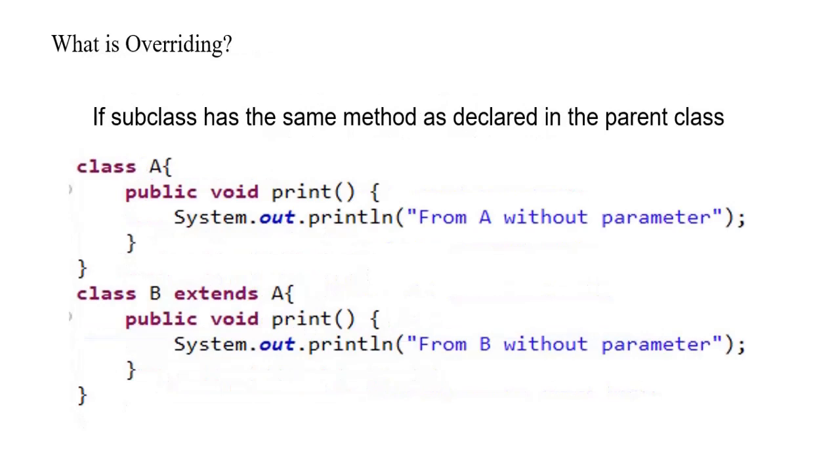I'm considering the same for what is overriding. If a subclass or child class has a same method as declared in the parent class, it is also important to have the same name of that method. If you are taking arguments, the order and the argument should be the same. In that case it is considered as overriding.